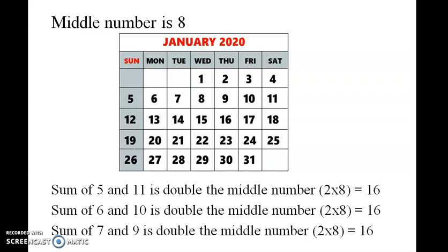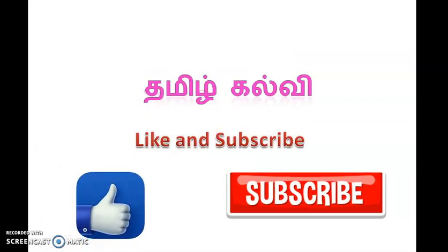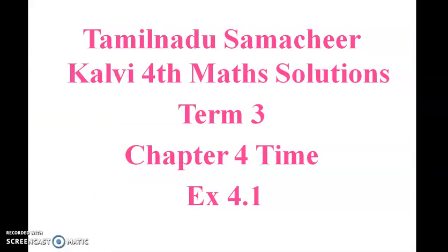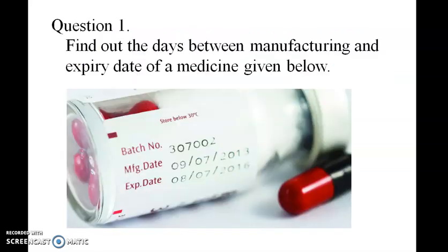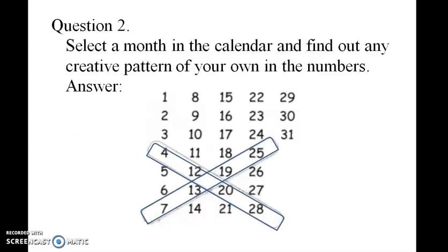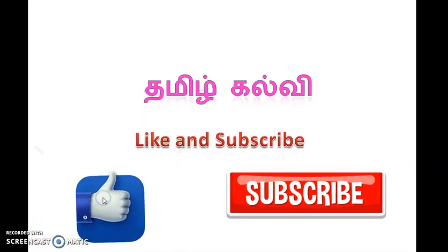Chapter 4.1 activity: find out the number of days between the manufacturing and expiry date of a medicine given below. We will see more tomorrow with another video.